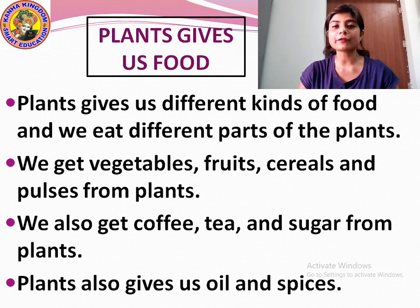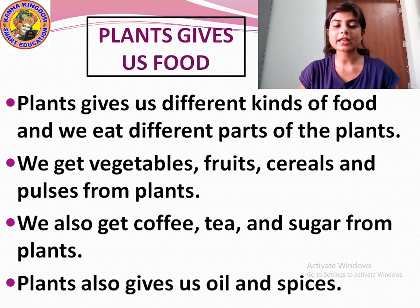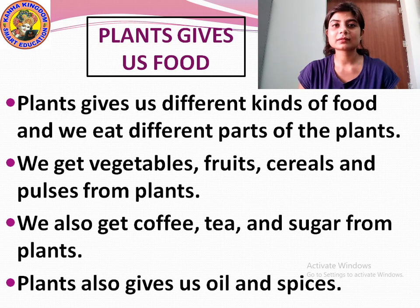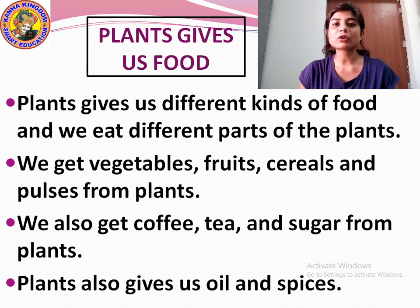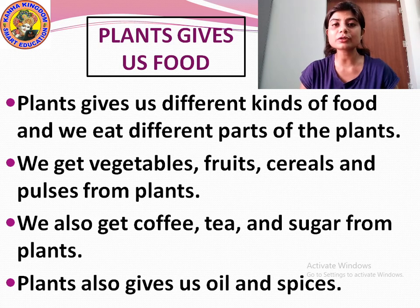We also get coffee, tea and sugar from plants — the coffee and tea that we drink. Then plants also give us oil and spices. The oil we use to cook food and the spices we add to our vegetables — all these are obtained from plants.